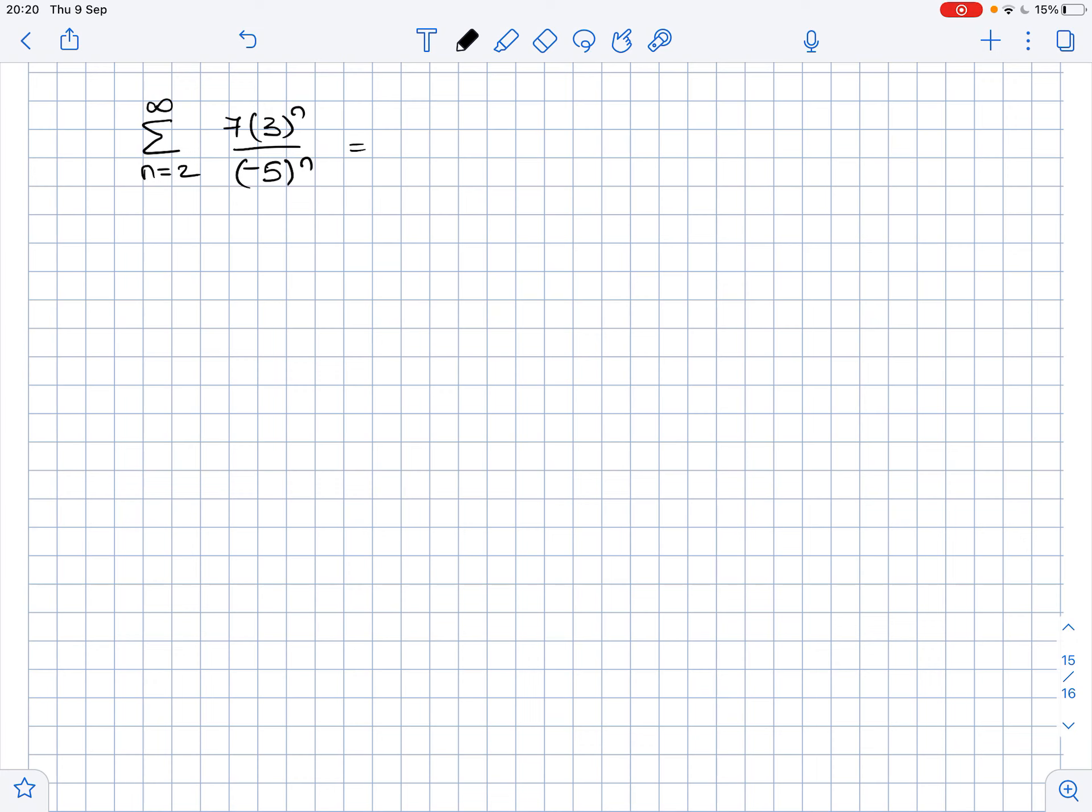Let's start by rewriting this series as the sum from n equals 2 to infinity of 7 times (negative 3 over 5) to the power of n. Now let's unfold it and look at the first term when n equals